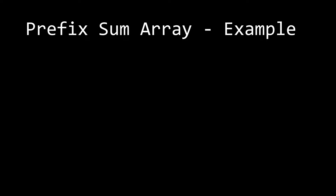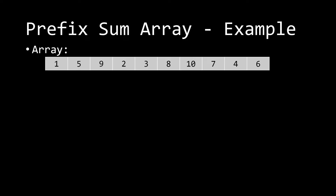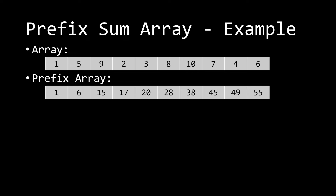Let's look at an example. Say our original array is: 1, 5, 9, 2, 3, 8, 10, 7, 4, 6. When we generate our prefix sum array, it looks like: 1, 6, 15, 17, 20, 28, 38, 45, 49, 55. At every index you can match it to the previous index plus the current element — that's the idea of pre[i] equals pre[i minus 1] plus the current element.